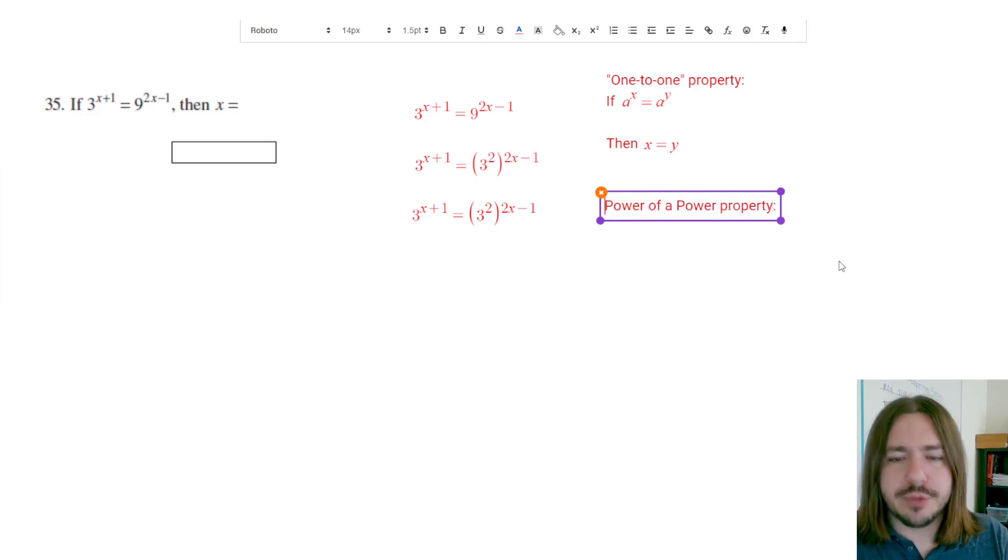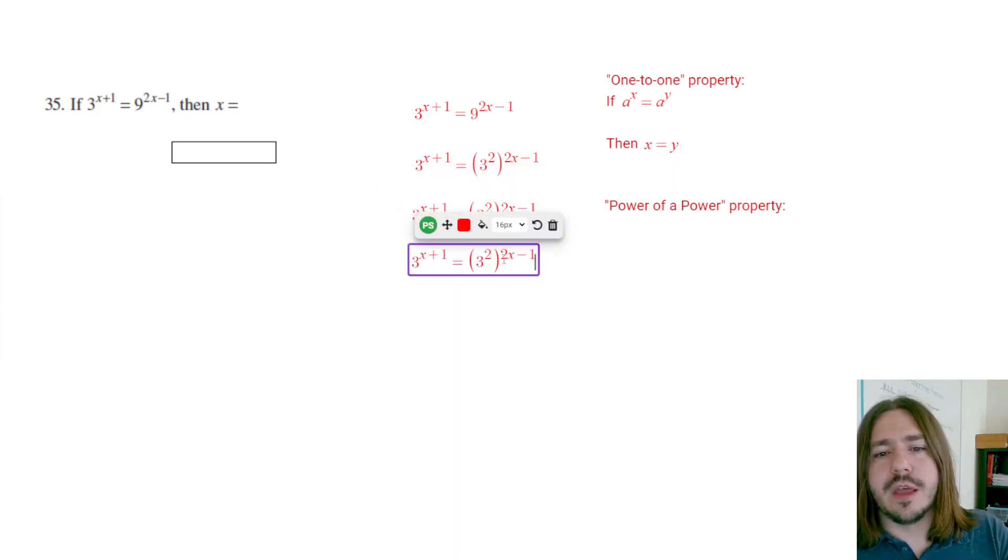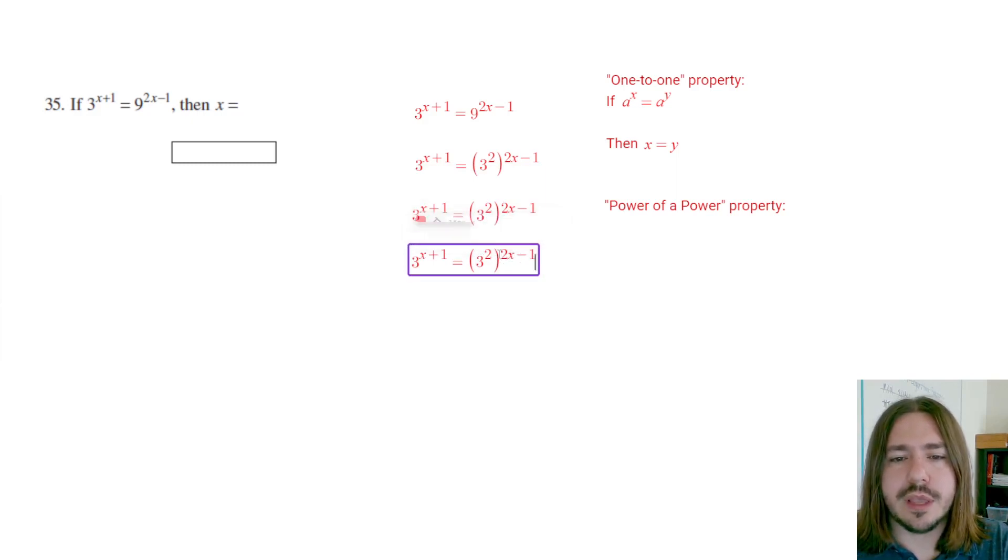But the idea behind it is that when you raise a power to a power, you can simplify that expression by multiplying the powers. So I'm going to do that and multiply this 2 by 2x minus 1. And I'll have to use the distributive property to do that. So 2 times 2x would be 4x, and 2 times negative 1 would be negative 2.